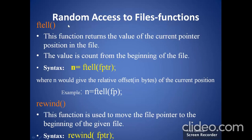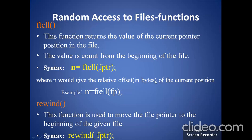Next, we will discuss different types of functions used for random access to files. The first one is the ftell function. This function returns the value of the current pointer position in the file. The value is counted from the beginning of the file. Consider the syntax of the ftell function: n = ftell(fptr); Here, n would give the relative offset in bytes of the current position. This means that n bytes have already been read or written.